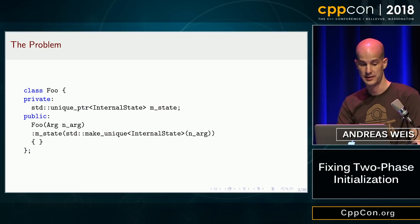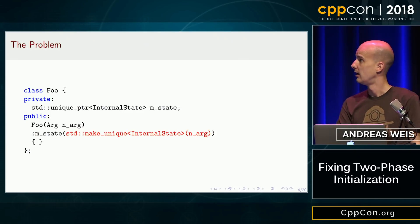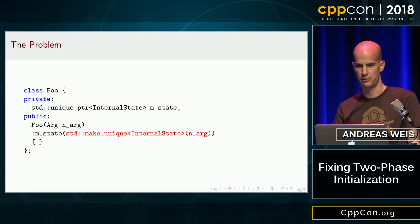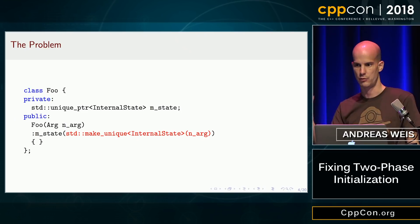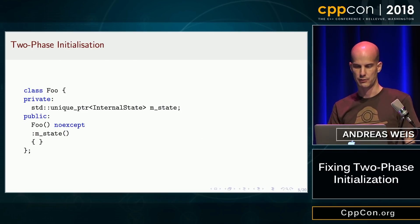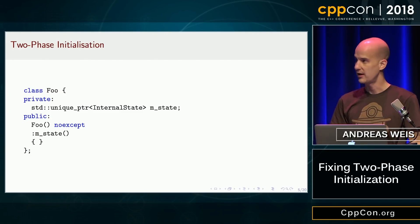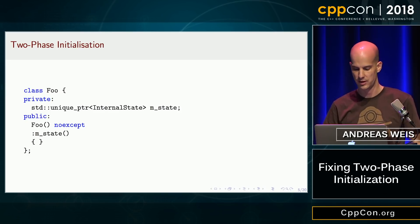This is our little example class for tonight and the problematic part is shown in red. Don't get too hung up on the make_unique — this is just a placeholder for any non-trivial initialization of the class state that could fail. If that fails, we actually want a channel for reporting that error back to the outside. So what people typically do is use two-phase initialization: make the constructor empty so we can mark it noexcept.